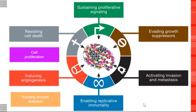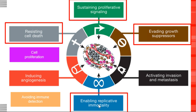Let's look at each of the pieces you need in order to get these bad cells. First of all, you have to sustain the signal to grow — sustaining proliferative signaling. You have to resist cell death. You have to evade growth suppressors, and you have to replicate forever. Those are the first four things. We will also talk about cell proliferation, inducing angiogenesis, avoiding your immune system, and then invading other places in the body — those are the other four things that have to happen.